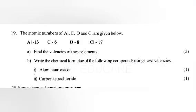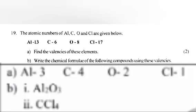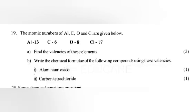Question 19: The atomic number of Al, C, O and Cl are given below. A. Find the valences of these elements. B. Write the chemical formula of the following compounds using these valences. 1. Aluminium oxide. 2. Carbon tetrachloride.